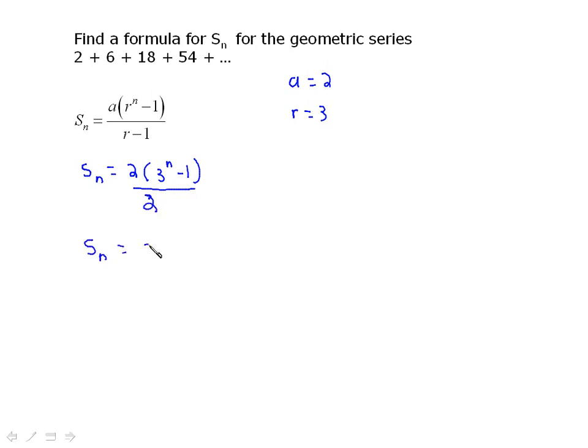So, that becomes 3 to the n minus 1 over r minus 1 is 3 minus 1 is 2. And then, when you divide out the 2's, you get 3 to the n minus 1. And this formula will work for us to find any values. So, for example, find S3. Well, instead of going right back to the beginning and working this one out with the formula, you just go S3 is equal to 3 to the 3 minus 1. So, 27 minus 1 is equal to 26. And by the way, you could tell by just adding these 3 together. So, I know it's right. But you could do anything you wanted, any sum you cared to find.